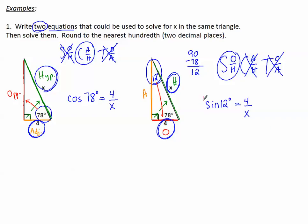So the first thing we were supposed to do is done. Write two equations. Both of these equations can be used to solve for x in the same triangle. Notice nothing different was given. I just have two different ways that I could solve it. Now, let's talk about how to solve it, and we'll round appropriately.